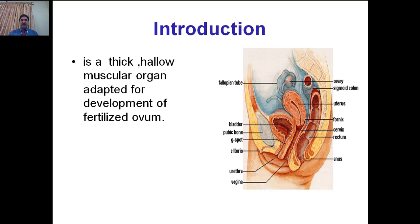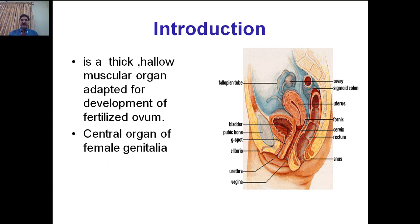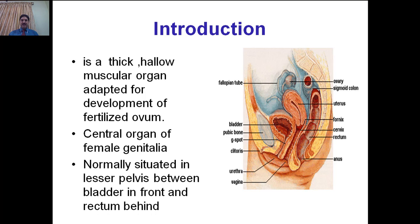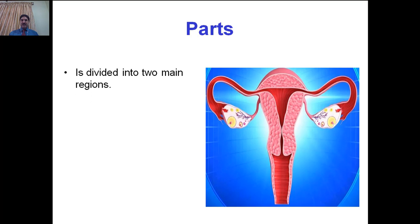Uterus is a thick hollow muscular organ adapted for development of a fertilized ovum. It is regarded as the central organ of female genitalia, normally situated in the lesser pelvis between the bladder in front and rectum behind. If we take a sagittal section of the female pelvis from anterior to posterior, the structures are: anteriorly, posterior to the symphysis pubis is the urinary bladder; posteriorly located in the pelvis is the rectum. Between these two structures lies the uterus.